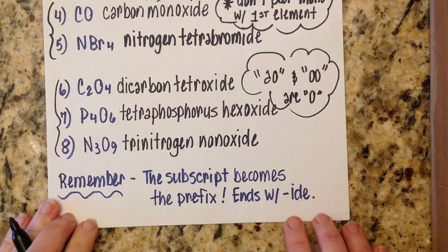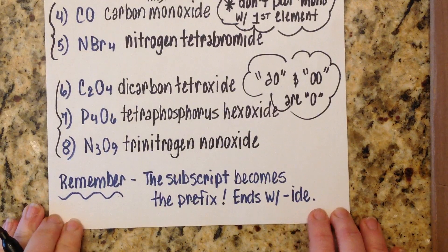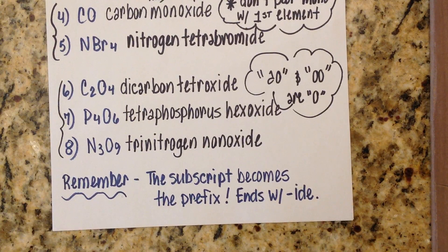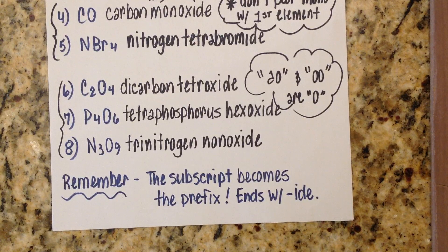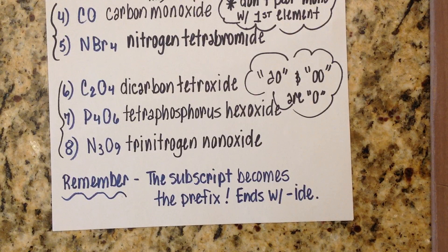And there you go. Remember: the subscript becomes the prefix, everything ends in IDE — that is the entire covalent lesson. The next lesson will go back to ionics and look at transition elements, and then we'll start mixing things up. Hope this was helpful. Make sure you practice your ionics and your covalents — there are so many good websites out there. Practice so you're ready for the next step.